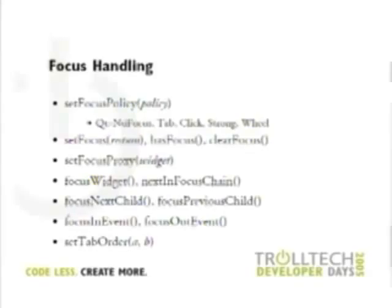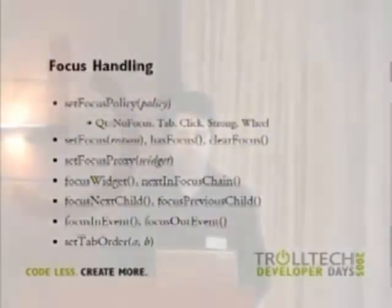All widgets by default have a focus policy that says how they should behave related to focus — whether they accept it or not. For example, a QLabel won't accept focus because focus is about keyboard input and there's nothing to type in a label. Qt's built-in widgets already have proper defaults. You can set different policies: whether the widget should be part of the tab chain, whether you can click on it to give it focus, or strong focus, which is both. There's also wheel focus, which accepts focus when you use the mouse wheel on top of the widget.